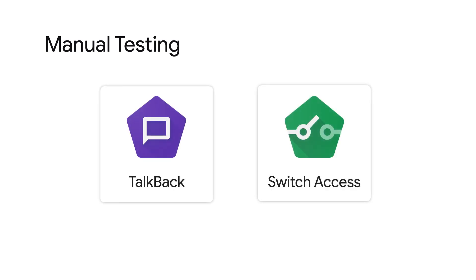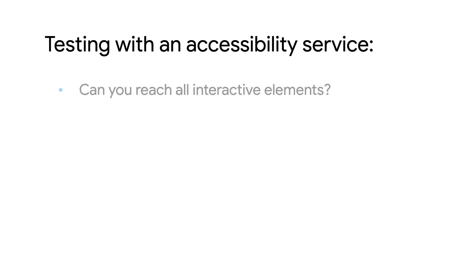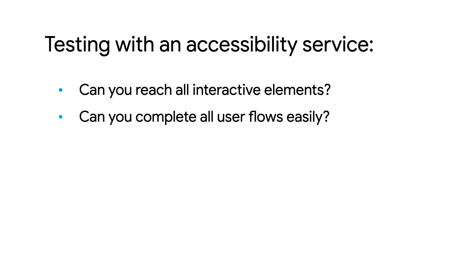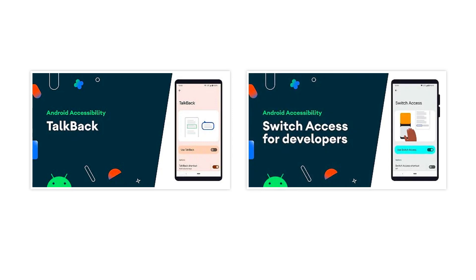It's important to remember that not everybody interacts with their device with gestures such as taps and swipes. Therefore, it's important to test your app by navigating through it with an accessibility service such as TalkBack or Switch Access. By interacting with your app using an accessibility service, you can experience the app as your users would. When exploring your app, pay close attention to: are you able to reach all the interactable elements on the screen? Are you able to complete all the user flows easily? For example, if there is a drag and drop action, is an alternative provided? Learn more about TalkBack and Switch Access in the two videos TalkBack and Switch Access.